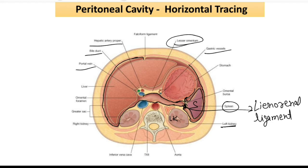The posterior layer covers all structures including the abdominal aorta, inferior vena cava, and the right kidney, then reflects on the anterior abdominal wall to complete the horizontal tracing. This concludes the peritoneal tracing both vertically and horizontally.